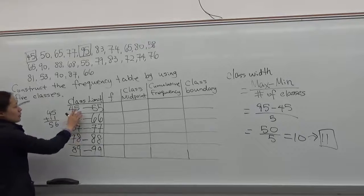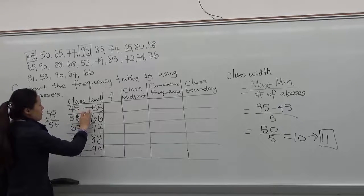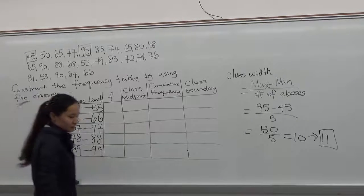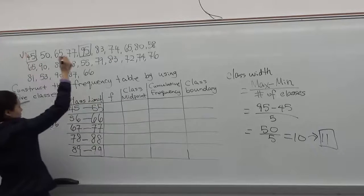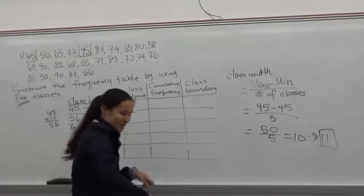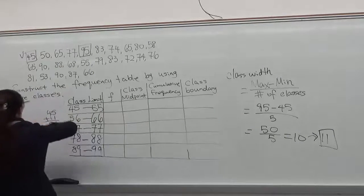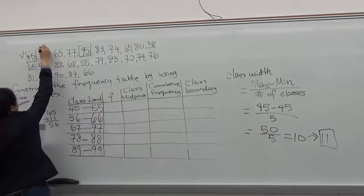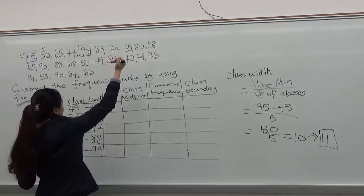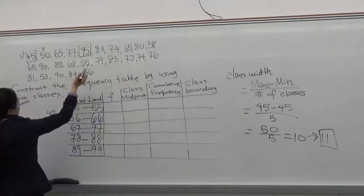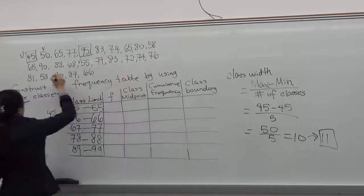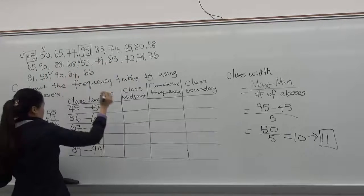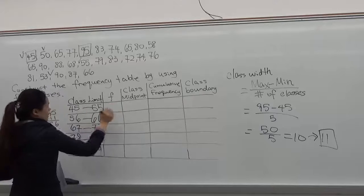Now we'll count how many numbers there are between 45 and 55. First, this is 1. 45 is the first number, and 50 is the second number. This is the third. This is the fourth one. So the frequency for the first class is 4.